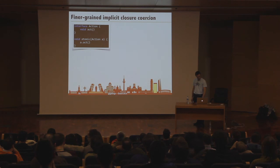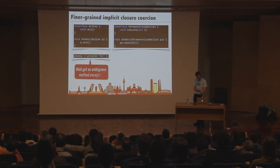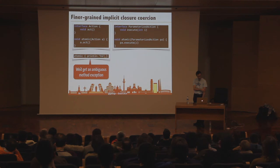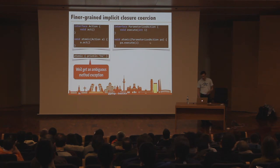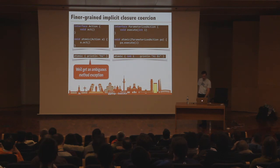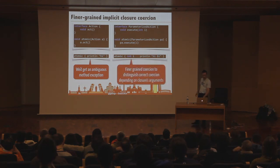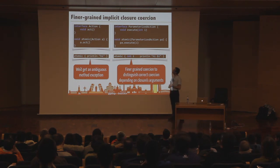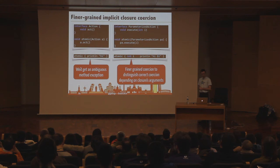Something we might add later: when using implicit closure coercion and you have overloaded methods — like two atomic methods each taking different parameterized action types — currently the compiler complains it doesn't know which one to call, so you have to use 'as' explicitly. A potential future enhancement is to disambiguate automatically based on the parameter types of the closure. We haven't received requests for it yet, but it's something we might do.